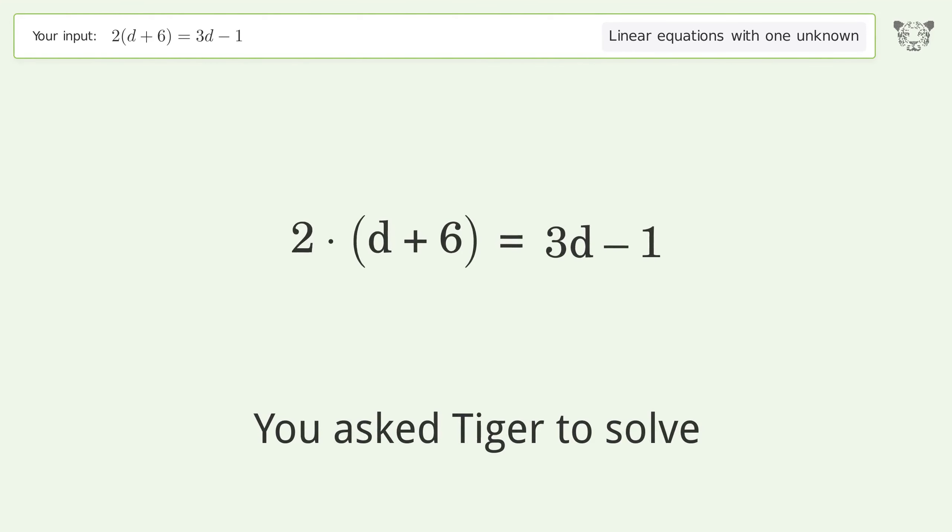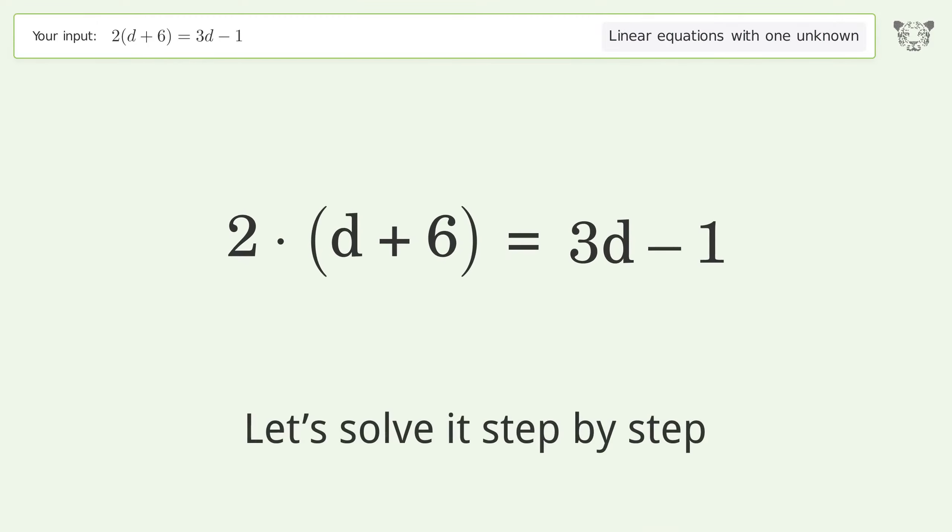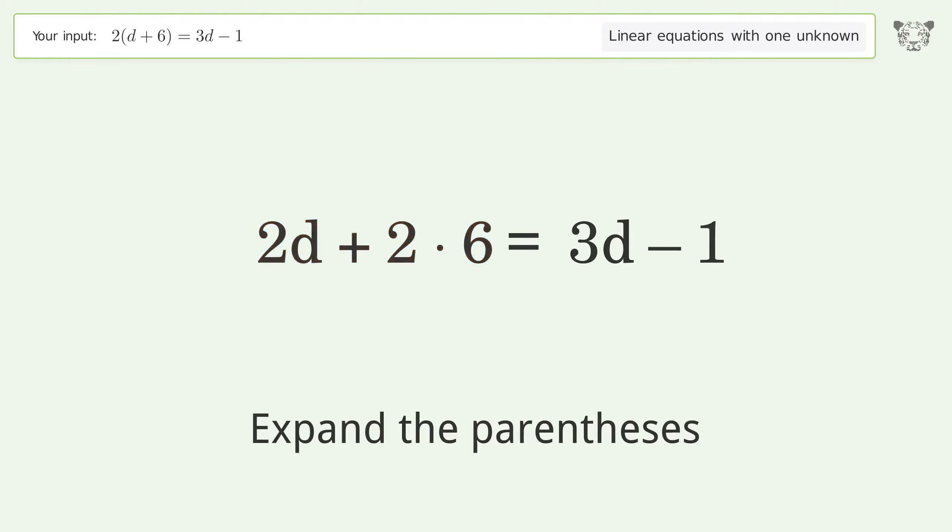You asked Tiger to solve this. It deals with linear equations with one unknown. The final result is d equals 13. Let's solve it step by step. Simplify the expression, expand the parentheses, simplify the arithmetic.